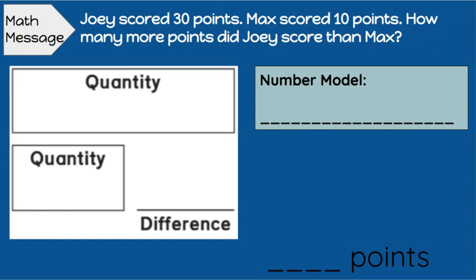Now let's think of our UPS check. What do we already know? We understood it, and we know that Joey has 30 points, and we know that Max scored 10 points. And we want to find how many more points did Joey score. So we're trying to find the difference between them.